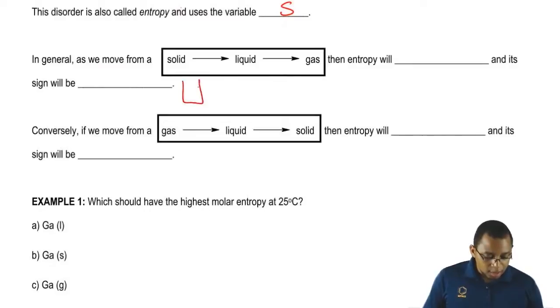So remember, a solid, all the molecules are tightly packed together on top of each other. Then as we become a liquid, the molecules are still around each other but because it's a liquid, they're naturally sliding over each other, moving around one another.